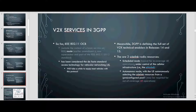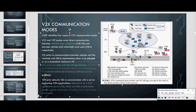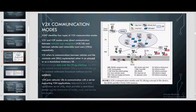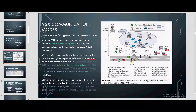UEs in coverage will use the scheduled mode. 3GPP identifies four types of V2X communication modes. V2V and V2P modes cover direct communication among vehicular UEs and between them and vulnerable road users. V2R refers to communications between vehicles and the RSU, implemented either in an eNodeB or as a stand-alone stationary UE. V2N puts vehicular UEs in communication with a server supporting V2N applications, referred to as a V2X application server (V2XAS), which provides centralized control.